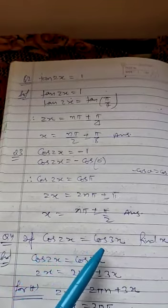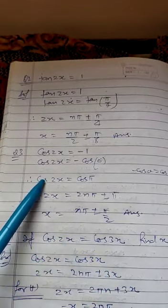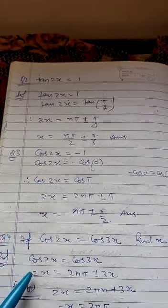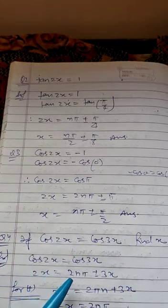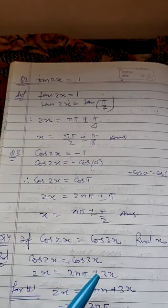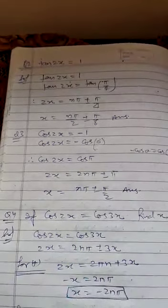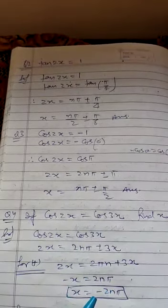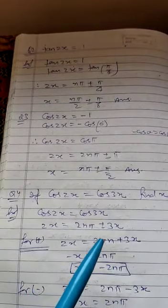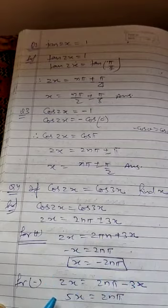Similarly, another question: cos 2x equals cos 3x. Find the value of x. So again, this question is totally based on the upper one. In this case, 2x equals 2nπ plus minus 3x. If we take positive, then this will be plus 3x, and after solving we will get x equals 2nπ/5. In the another case, if we take negative, then it will be like this: 5x equals 2nπ, so x equals 2nπ/5.